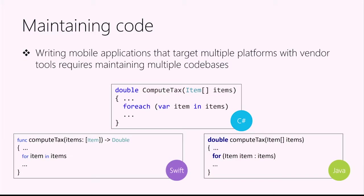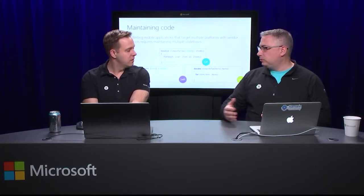That sounds expensive — and it is. It's a code maintenance issue. Whether that means writing code three times, having multiple development teams each specializing in a language, or dealing with a simple for loop that looks slightly different in C#, Swift, and Java — you can't copy-paste it. If you make a change in one place, you've got to make it in the others, and things come out of sync. Actual production applications are much more complex than that.